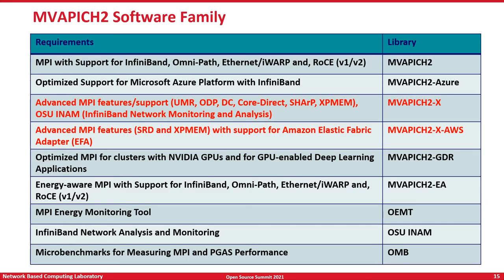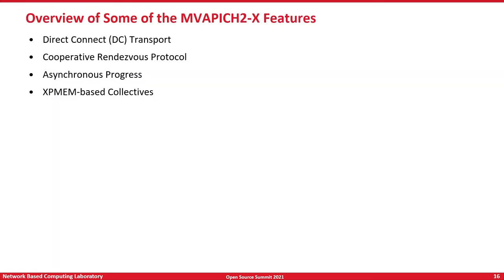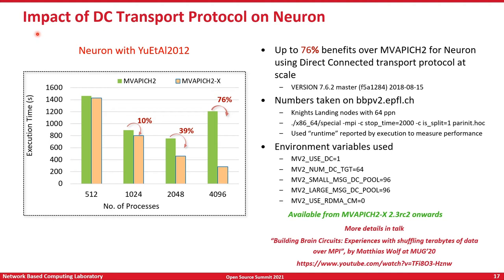Thanks, Dr. Panda. So far we were looking at some of the basic features that all MVAPICH2 software stacks offer. Now let's go into some advanced features offered by the MVAPICH2 family of software libraries. In this section, we will look at MVAPICH2X and MVAPICH2X with support for Amazon Web Services high-performance computing clusters. While MVAPICH2X has many different advanced features, in this particular presentation we will focus on select ones: the Direct Connect Transport Protocol, the Cooperative Rendezvous Protocol, Optimized Asynchronous Progress Mechanisms, and XPMEM-based collective operations.